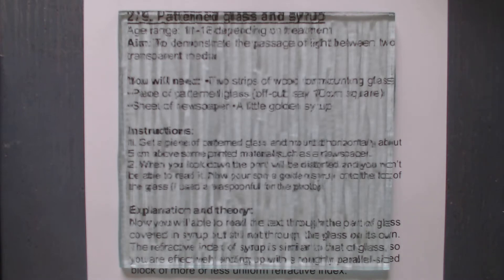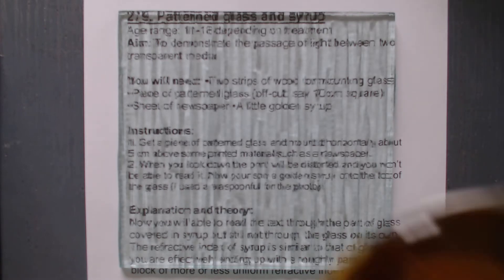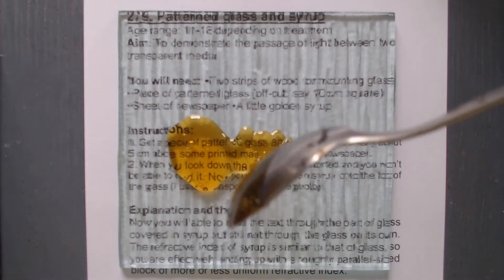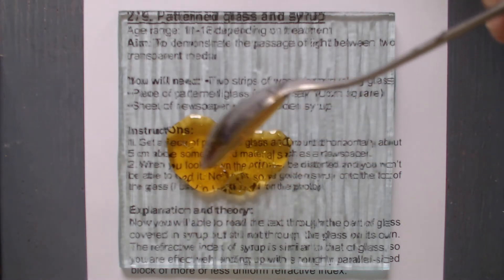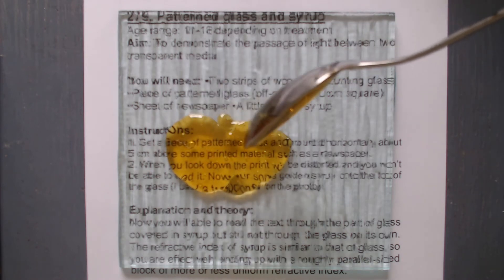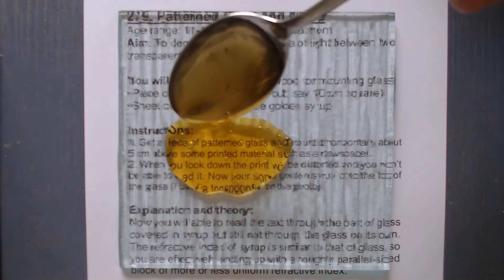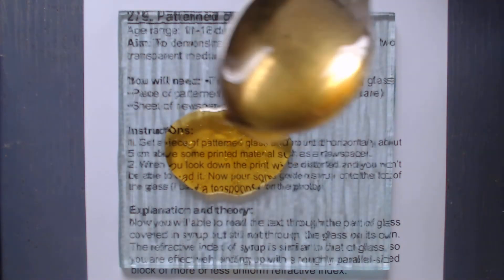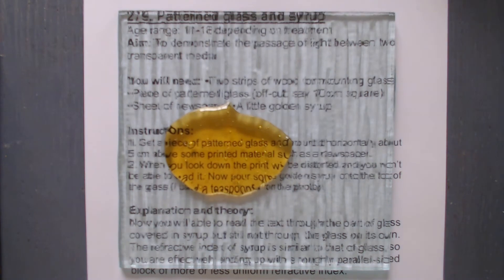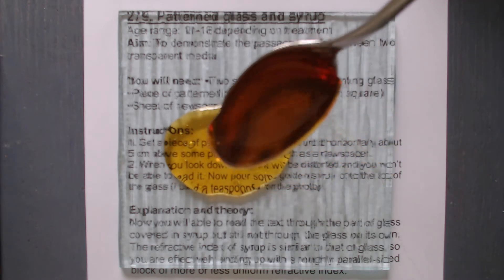Now let's put some syrup on the top of the typing. It's fairly sticky stuff, so it's going to take a while to drain off the spoon. But it's getting better and better by the moment. You can see that the typeface below the glass on its own is really quite difficult to read, but the typeface underneath the syrup is much, much easier to follow.